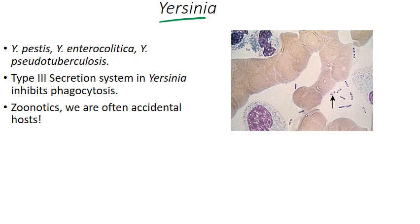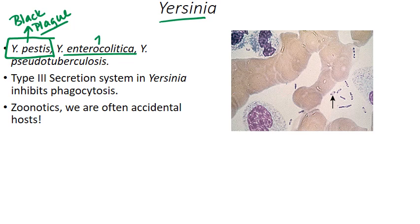Let's start with Yersinia. The most famous member is Yersinia pestis, the cause of the Black Plague or plague in general. It's been a major mover and shaker in human history with the number of people it has killed. There are two other forms we'll talk about briefly: Y. enterocolitica, which basically just causes a gastroenteritis, and Y. pseudotuberculosis, which acts and looks like tuberculosis but isn't — it causes pneumonia-like symptoms. Like other Enterobacteriaceae, it has a type 3 secretion system and is able to escape phagocytic machinery, just like Shigella.